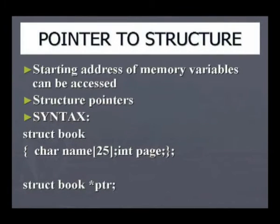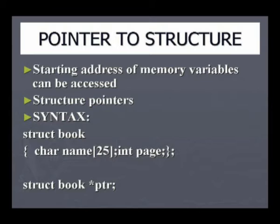This concept of pointer to a structure is how you access the members of a structure using pointer variables. Here, the starting address of the memory variable can be accessed. This is just similar to an array — an array is also considered as a pointer variable because the name of the array itself holds the address of the first variable. That same concept is used here: the starting address of the memory variable is accessed.